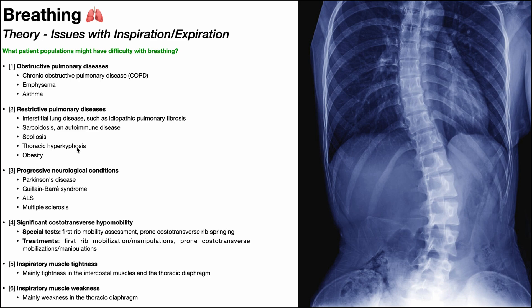Then we have thoracic hyperkyphosis — another spinal issue with excessive kyphosis in the thoracic spine. To understand this, stand up with nice upright posture and take a deep breath in — not very hard. Now slouch down at the thoracic spine, essentially pushing your rib cage almost into your pelvis, really bad posture, and take a deep breath in. Much more challenging, because now your rib cage doesn't have a lot of room to expand. So thoracic hyperkyphosis, which is essentially that slouched position with excessive kyphosis, is going to cause difficulty with inhalation.